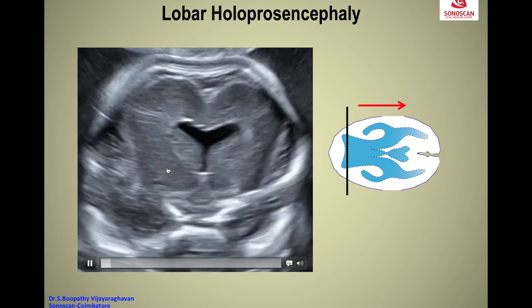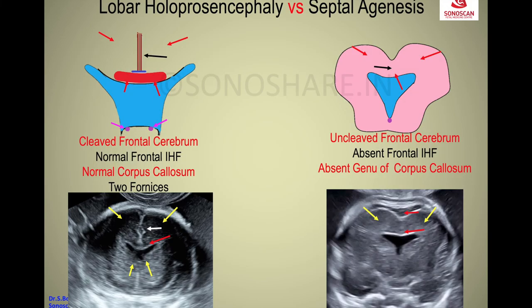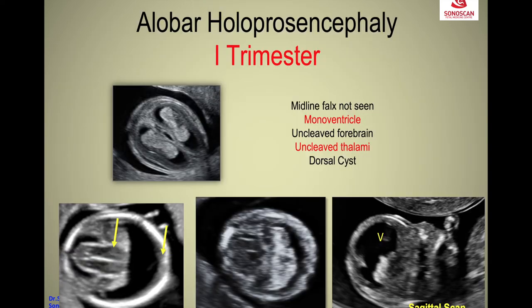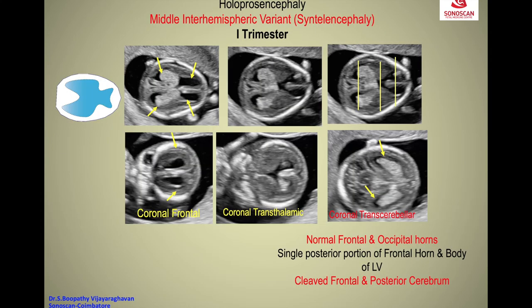In the occipital region there are well-cleaved occipital lobes with two columns of the fornix. The single ventricle shows absent septum pellucidum with a single posterior portion of the frontal horn. The anterior frontal horn is separate, whereas the posterior monoventricle is shown by V. There is a dorsal cyst; the frontal and occipital lobes are cleaved whereas centrally the ventricle remains single — this is the middle interhemispheric variant.